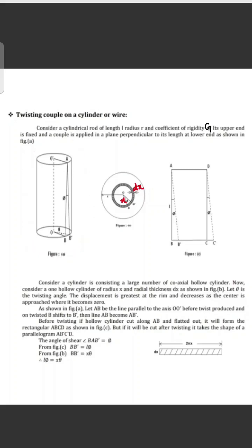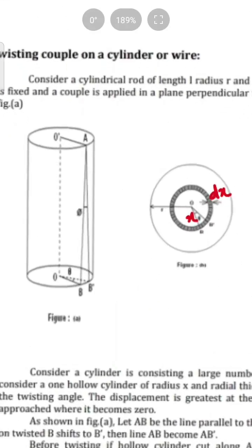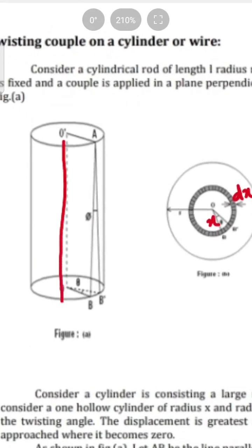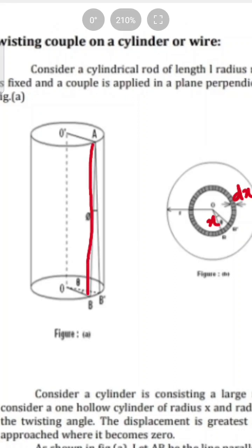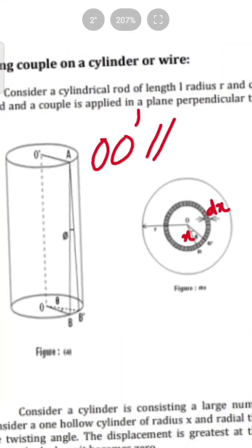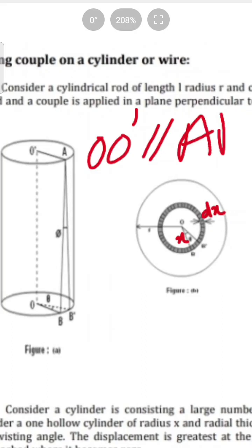Let AB be the line parallel to the axis OO' before twisting. This is the straight line AB.